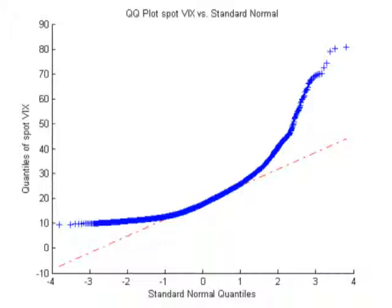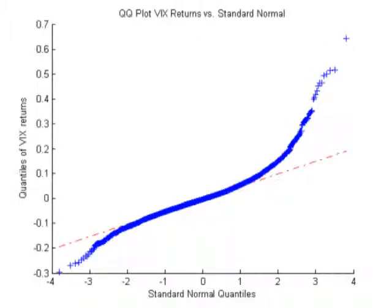Intuitively, it makes sense since the VIX index often experiences very sharp upward spikes. It is interesting to observe that there exists a natural floor around 9% on the left side, i.e. historically speaking, 9% has been a minimum for spot VIX.